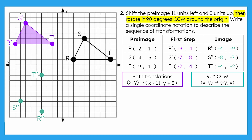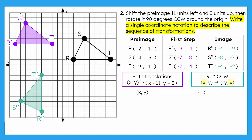Now we can plot these coordinates to create RST double prime on the coordinate plane. Our final step is to write a single coordinate notation to describe the sequence of transformations, summarizing the changes from both the translation and rotation. The x-coordinate decreased by 11 in the translation, and the rotation switched it to the y-position. So x minus 11 becomes the new y-coordinate in our coordinate notation.